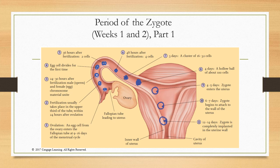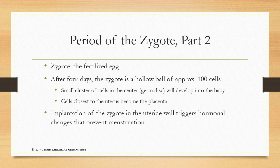At day 6 to 7 the zygote begins to attach to the wall of the uterus, and at day 12 to 14 the zygote is completely implanted in the uterine wall. That completes the period of the zygote. What's remarkable is that this is harder to accomplish than carrying to full term — it should really be called the miracle of conception, not the miracle of birth.